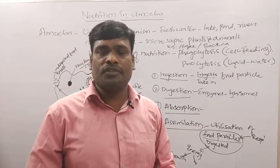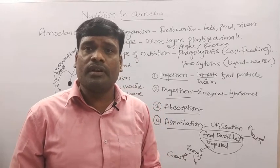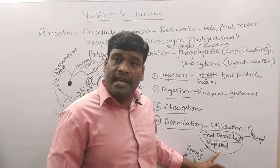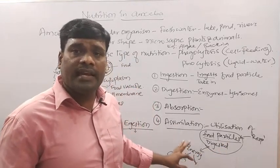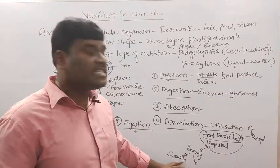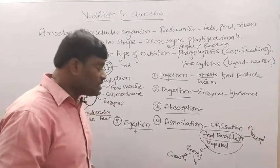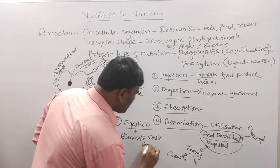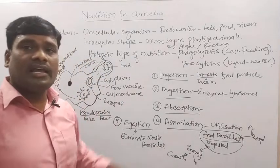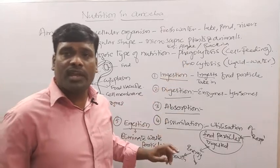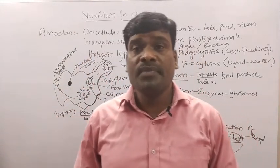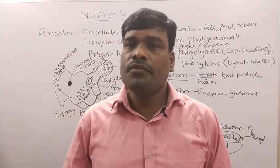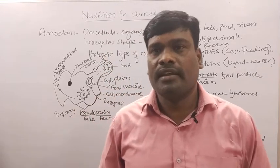Respiration in amoeba takes place by the process of diffusion — you will study this in the respiration class. After assimilation, the fifth stage is egestion — eliminating waste particles. These are the five important stages in the nutrition of amoeba. This is a very important question in board exams. I hope you have understood well and really enjoyed this topic. Please subscribe to my channel. Thank you.